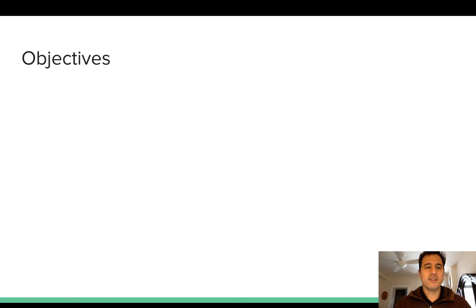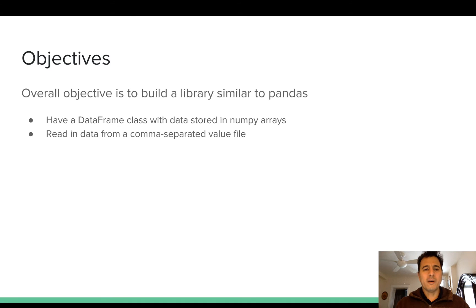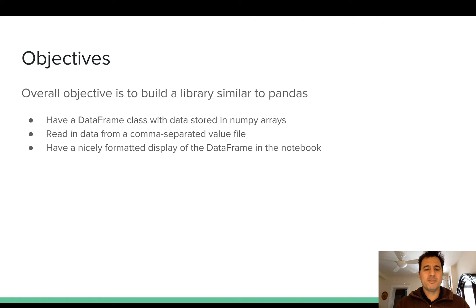Here are the major objectives for this entire project. The end result, as already mentioned, is to build a library similar to pandas. We're going to have one main class — the DataFrame class, which is the same main class that pandas has. The data will be stored in NumPy arrays. We will be able to read in data from a comma-separated value file, so we'll have a simple way of getting data in from text files. We'll also have a nicely formatted display of the DataFrame in the notebook — similar to how pandas shows its DataFrames as HTML tables in Jupyter notebooks.